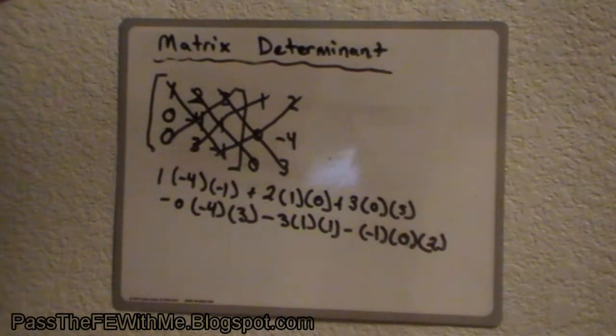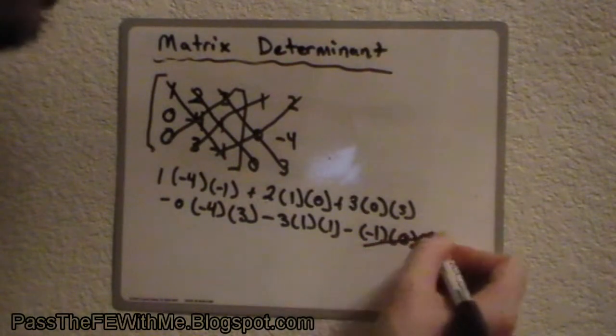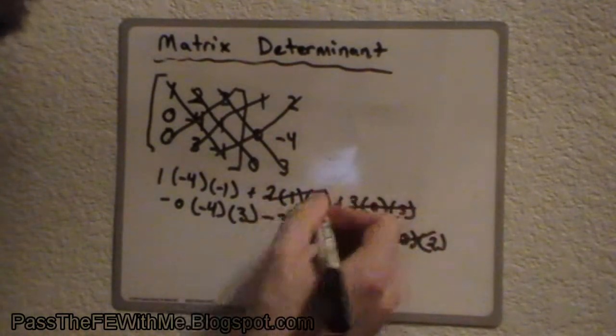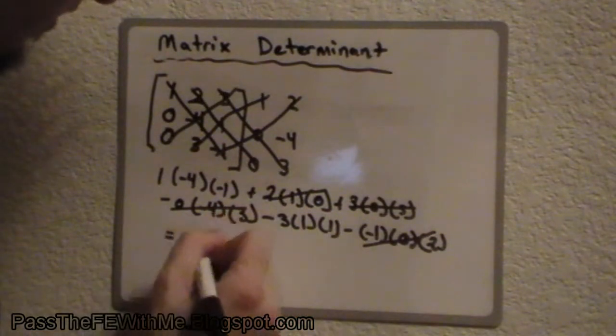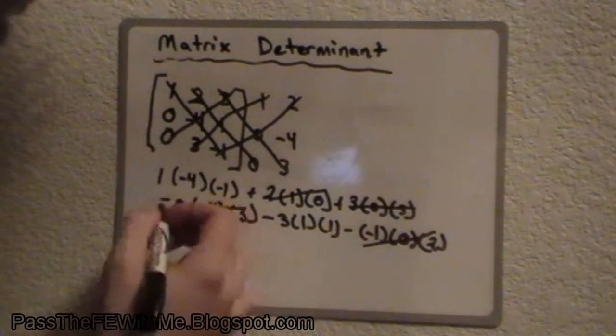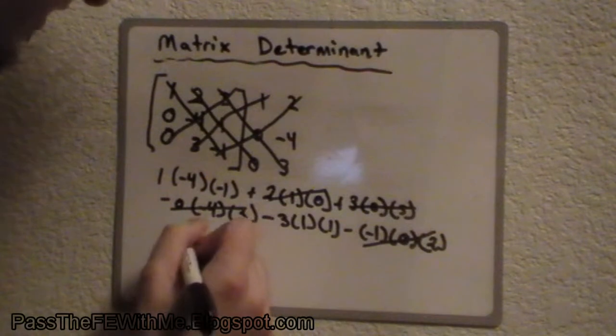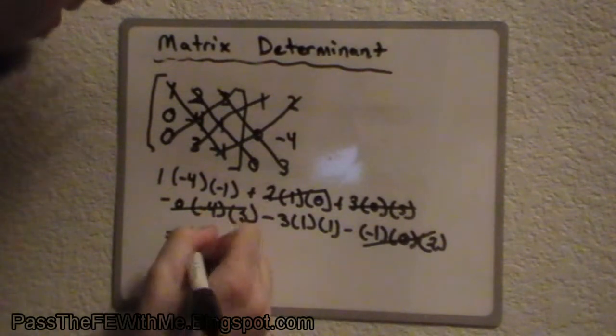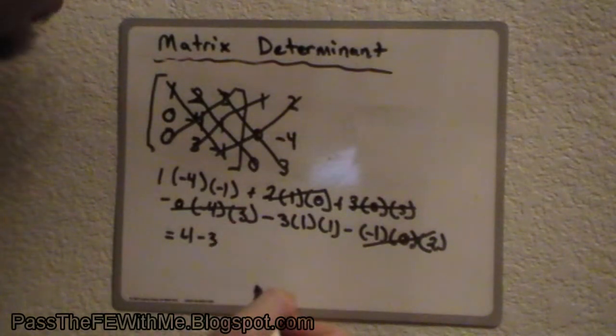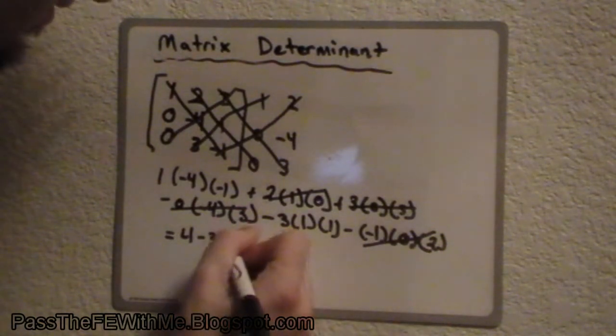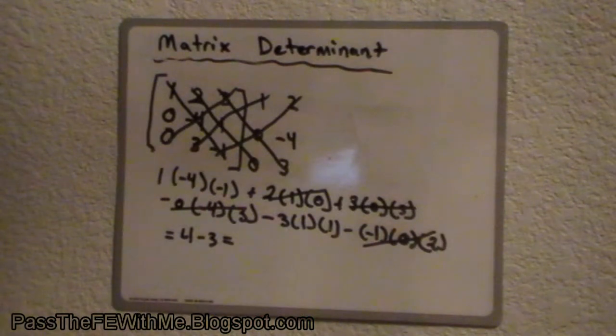Now, you can see there's several parts here that have 0, so we'll just get rid of all those. We'll call this negative 4 times 1 times negative 1 equals 4 and negative 3 times 1 times 1 equals 3, leaving us with 4 minus 3 which equals 1.